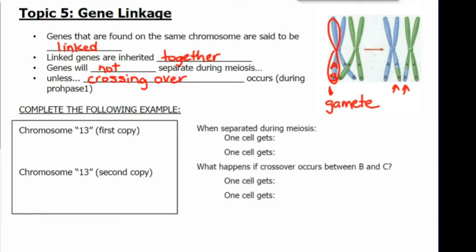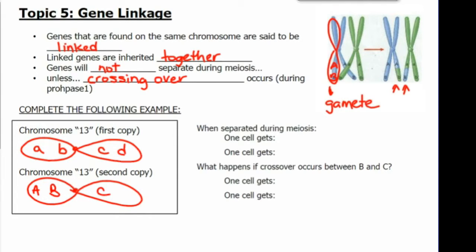Let's look at chromosome 13. The first copy has all lowercase genes A, B, C, and D. The second copy has all uppercase genes capital A, B, C, and D. When separated during meiosis for the first copy of chromosome 13, no crossing over has occurred. So one cell gets little ABCD and the other cell would get capital ABCD.